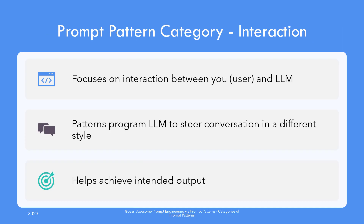Interaction category focuses on interaction between you, the user, and the large language model. The patterns program the large language model to steer the conversation with you in a different than default style, so that the end goal of intended output is achieved. For example, the flipped interaction causes ChatGPT to ask you questions to understand you and your intent better.